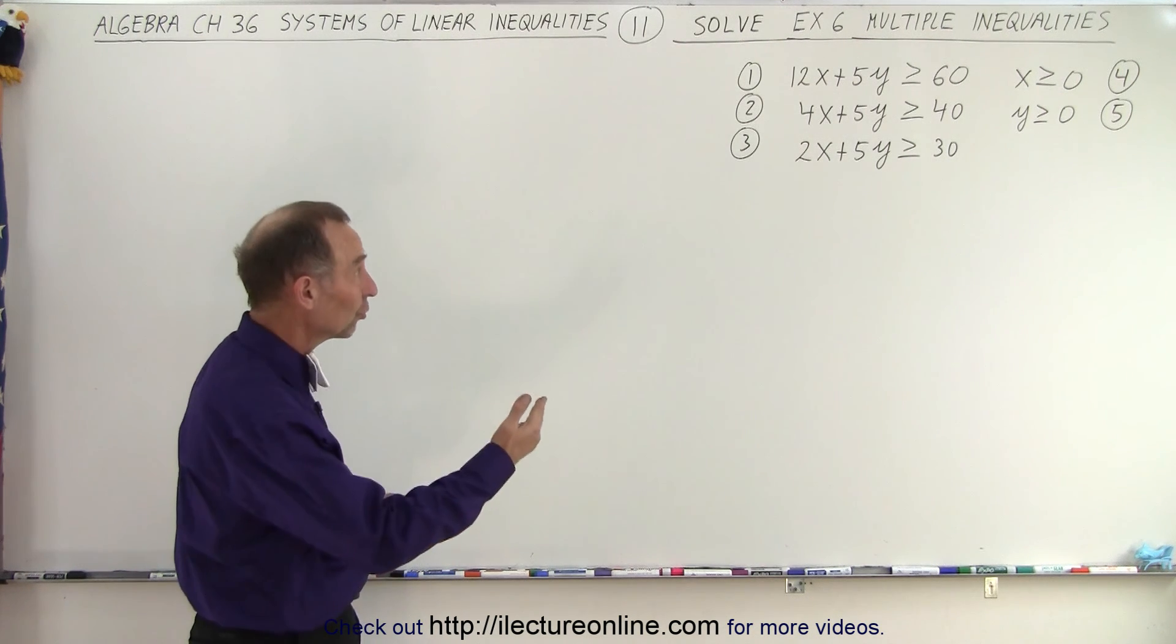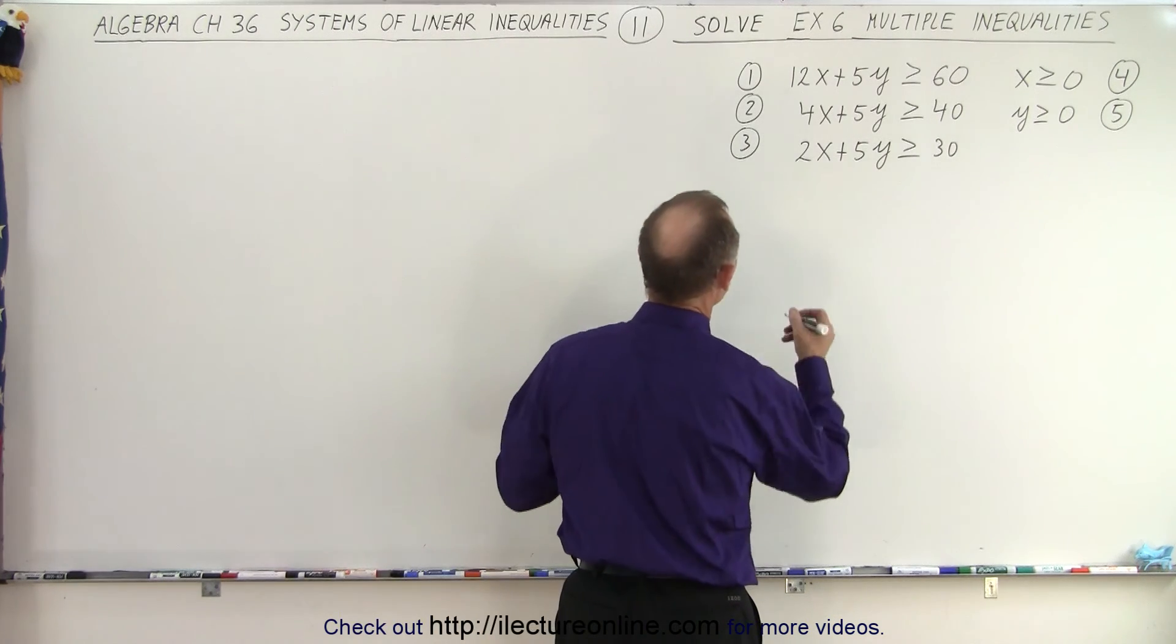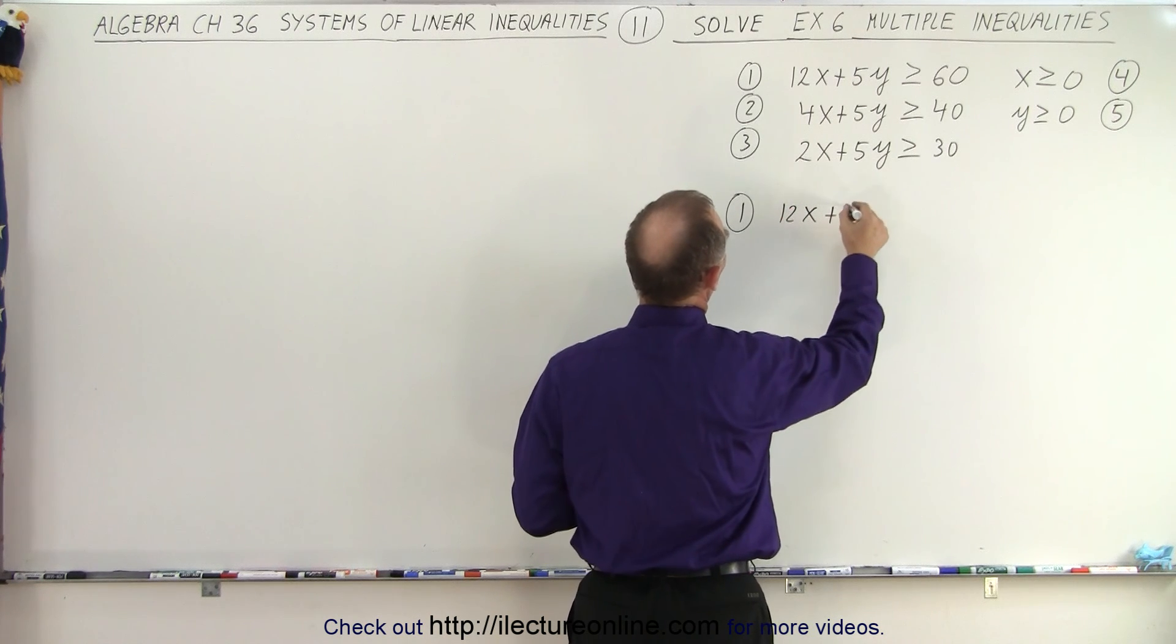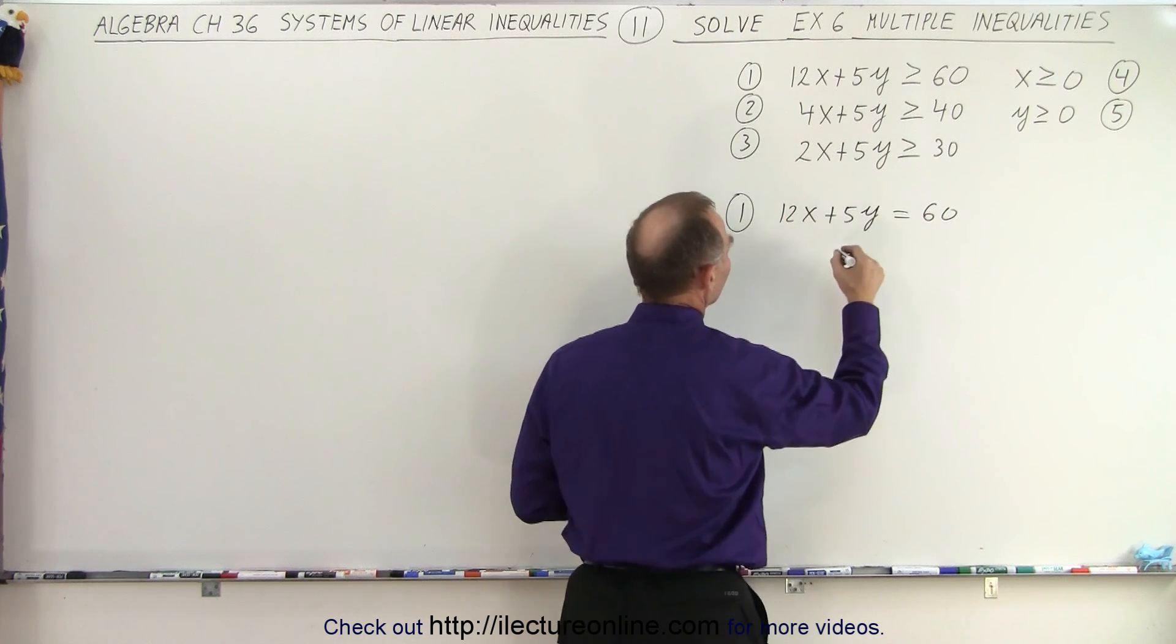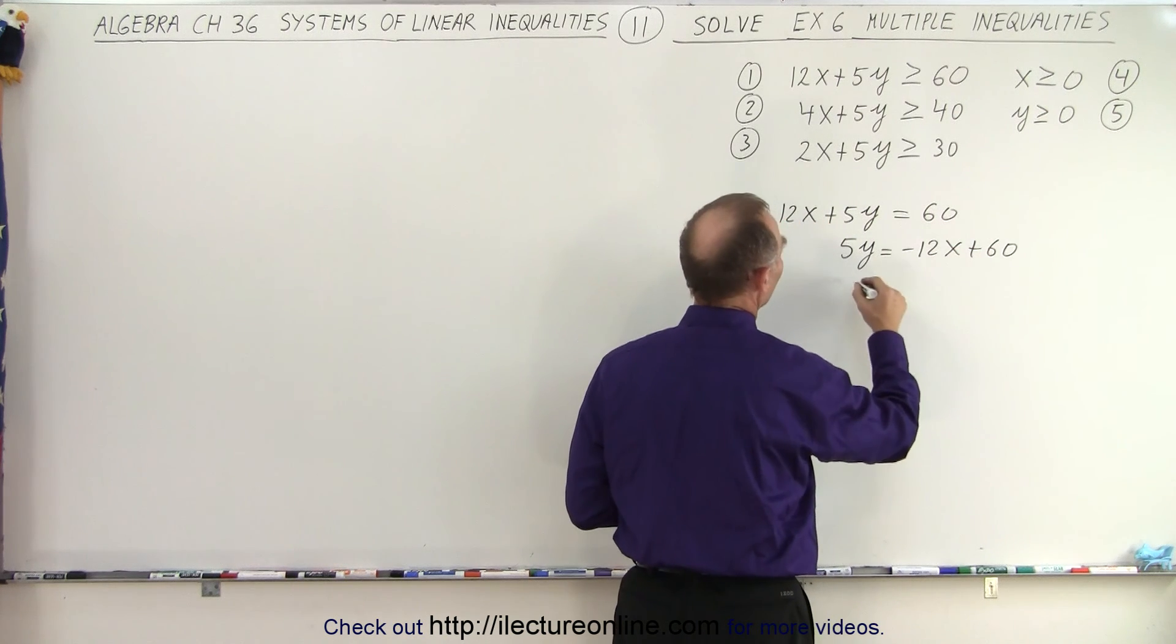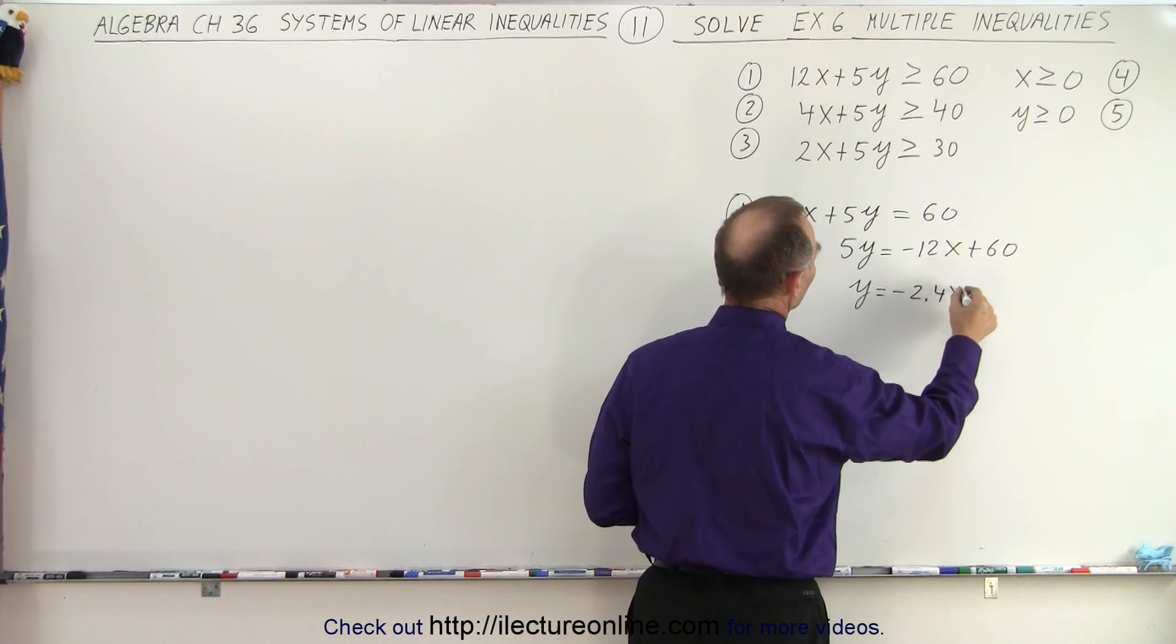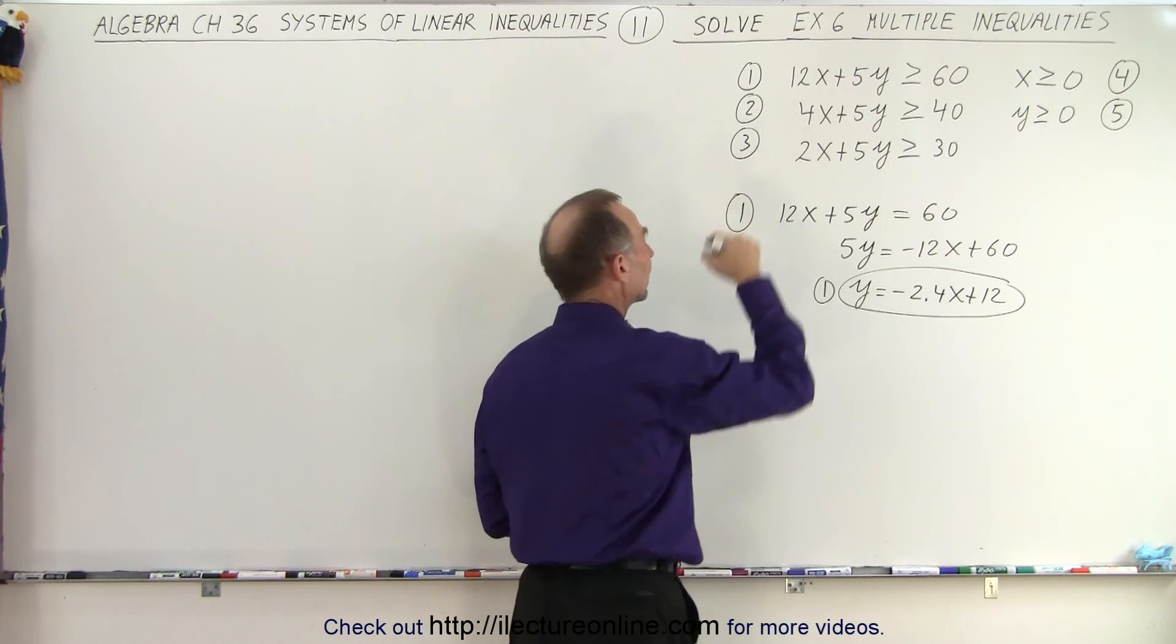Again, the idea is to turn those into equations to find the boundaries. The equations will then be for number one: 12x plus 5y equals 60. Move the 12x across, 5y equals minus 12x plus 60. Divide everything by 5, y equals minus 2.4x plus 12. So there's equation number one to go with inequality number one.